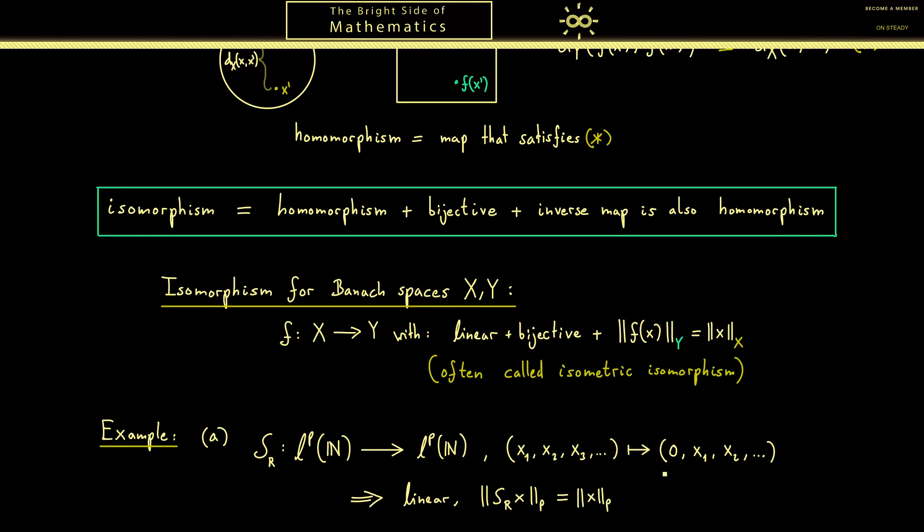The only thing we changed was the 0 here but a 0 can't change the norm. So that's very nice because we have already two things for our isomorphism. However you might already see it, it can't be an isomorphism because it's not bijective. More concretely it's not surjective because we can't get any other numbers here than a 0. Therefore this is not an isomorphism.